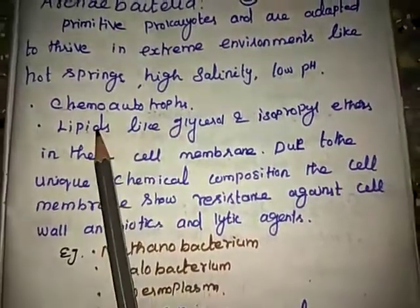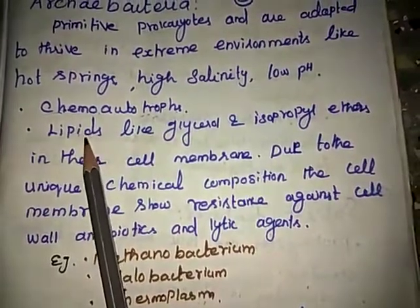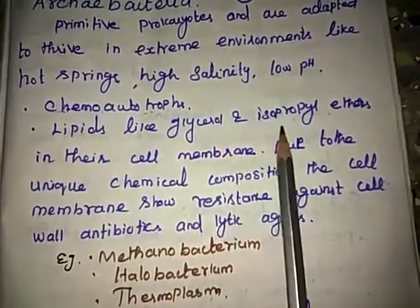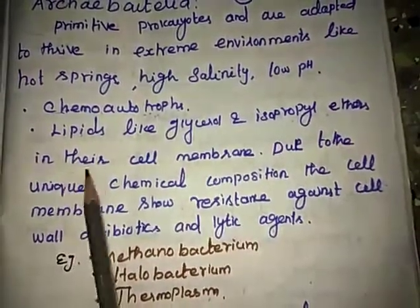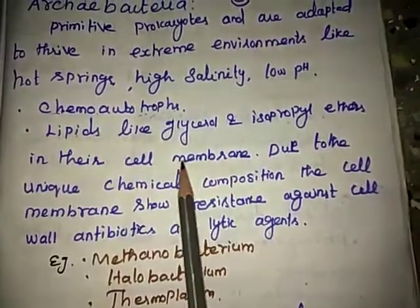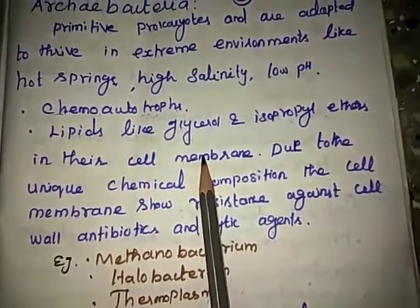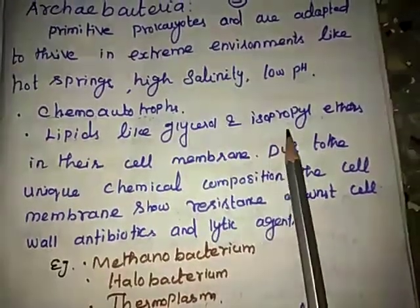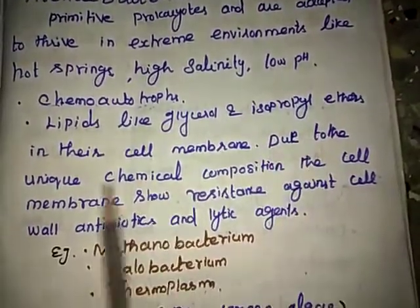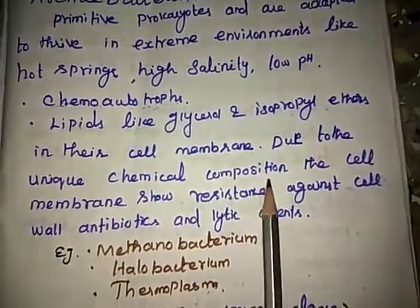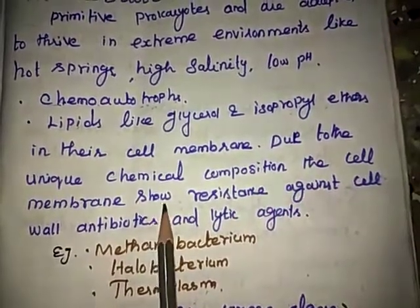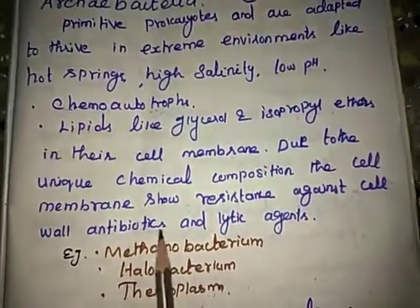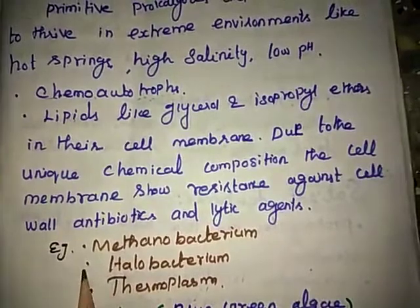The unique features of this group include lipids like glycerol and isopropyl ether present in the cell membrane. Due to this unique chemical composition, the cell membrane shows resistance against antibiotics and lytic agents.